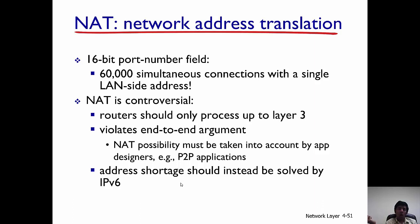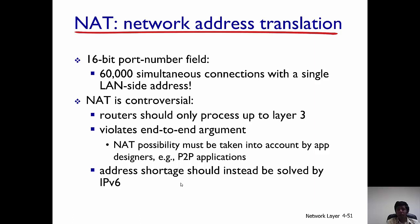The port field is 16 bits long, so there can be up to approximately 60,000 simultaneous connections with a single LAN-side address. NAT is also somewhat controversial — routers should technically only process up to layer 3, but NAT requires looking at port numbers, which belong to layer 4, the transport layer. This violates the end-to-end argument. The proper solution to IP address shortage is IPv6, but unfortunately IPv6 implementation has been limited to date.